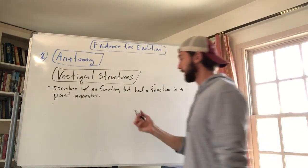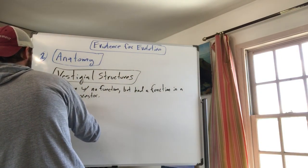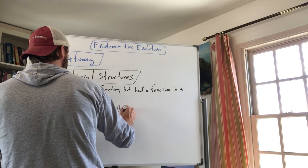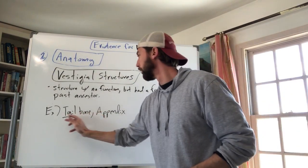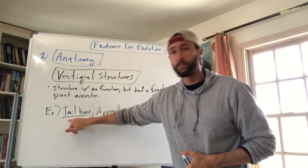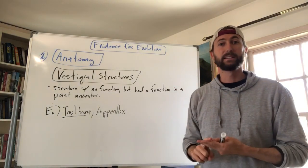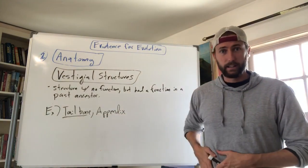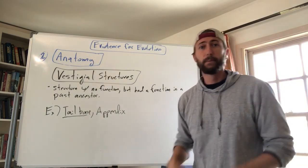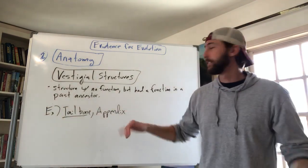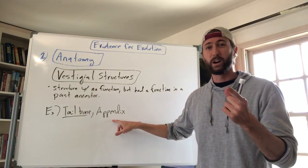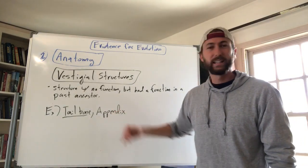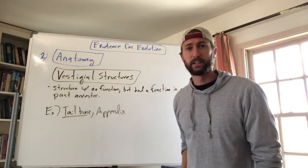Two great examples of vestigial structures in humans are the tailbone and the appendix. The tailbone is actually the remains of a tail from our ancient monkey and ape ancestors, who used it to balance and climb trees. The appendix, located in your lower right abdomen, used to help with digestion when our ancestors were hunter-gatherers eating more raw foods. Now that we cook our food, we don't really need it anymore. It once had a function in the past but no longer does today.